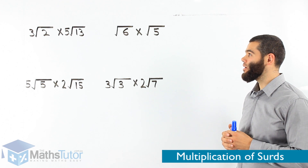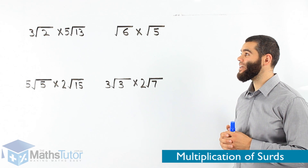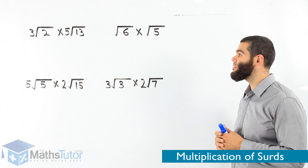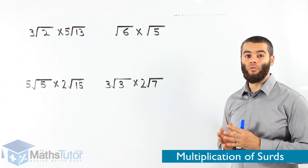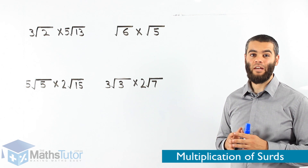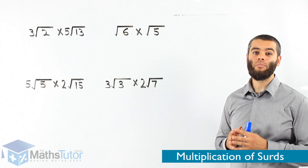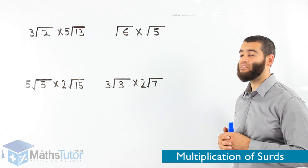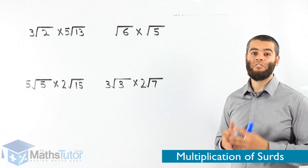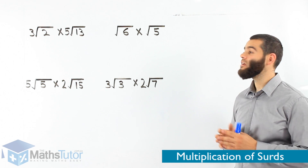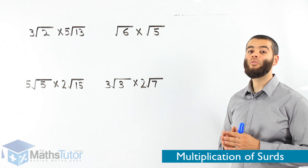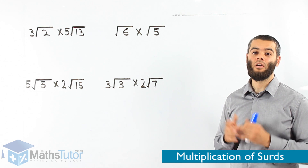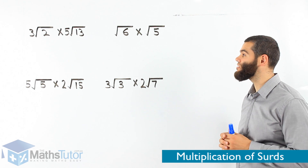We have an example where it says root 3 times root 11. We simply multiply the 3 and the 11. 3 times 11 is 33, so our answer is root 33. It is that simple — we just multiply the numbers. Root 33 is the answer.